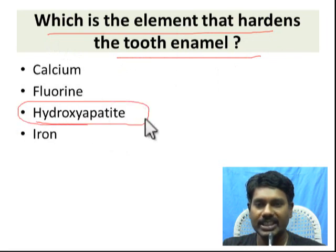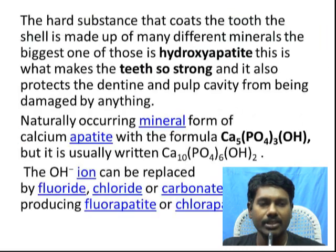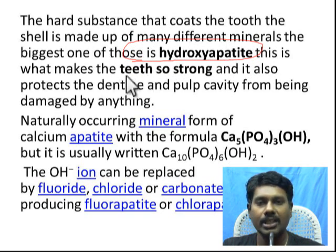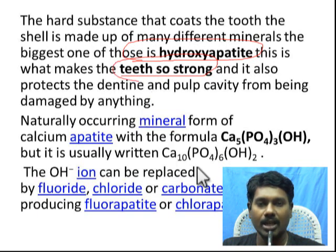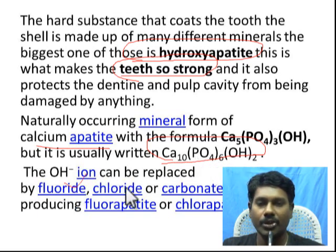Hydroxyapatite is very important — it is the hard substance that coats the tooth enamel, making teeth very strong. It is a mineral: calcium hydroxyapatite, with formula Ca10(PO4)6(OH)2 — calcium phosphates with OH groups. Fluorine or chlorine can substitute in this structure, forming fluoroapatite or chloroapatite.